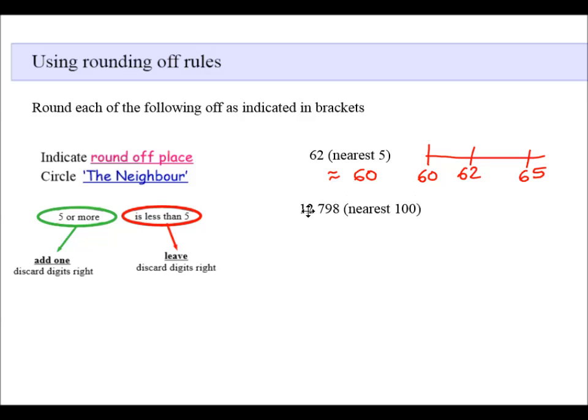Let's have a look at the next one. We round to the nearest hundred. Well, first of all, we need to identify the hundred. So we have 700 and we are going to circle the neighbor. The neighbor is nine. If it is five or more, we add one. So we're going to add one to the hundreds column and discard the rest, or in this case with whole numbers, we fill up with naught. So this number rounded to the nearest hundred would be 12,800.